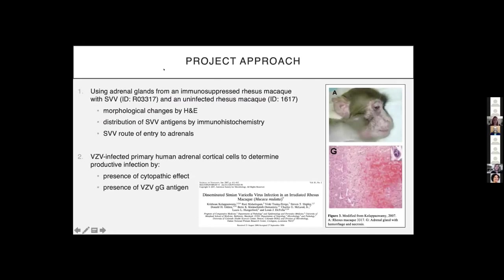For the animal component of our study, we used adrenal glands from an immunosuppressed rhesus macaque infected with primary active SVV, shown here in A, who was studied in 2007 and showed hemorrhage and necrosis in their adrenal glands. We compared these to an uninfected rhesus macaque to determine the morphological changes, the distribution of viral antigens, and the route of entry of the virus into the adrenals. For the human component, we took VZV-infected primary human adrenal cortical cells to determine productive infection.